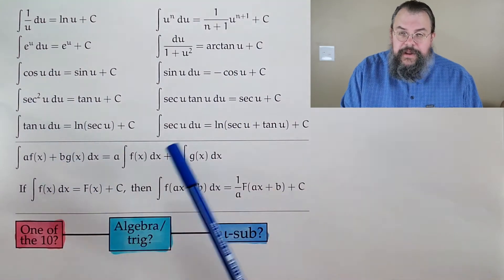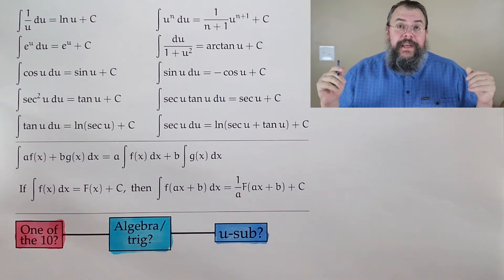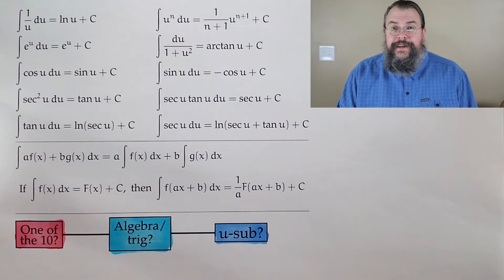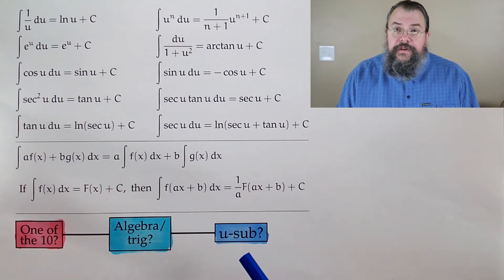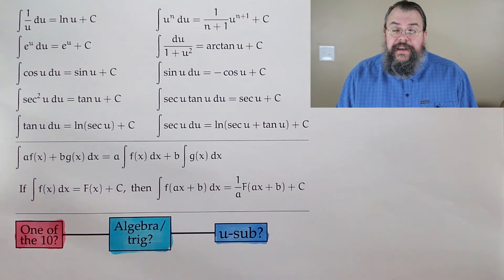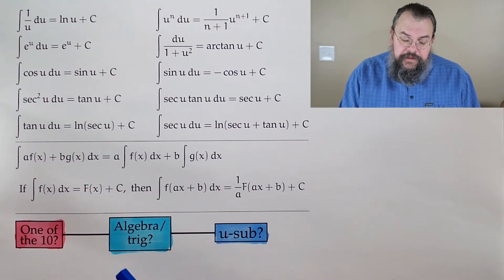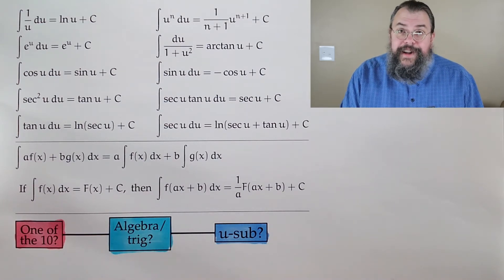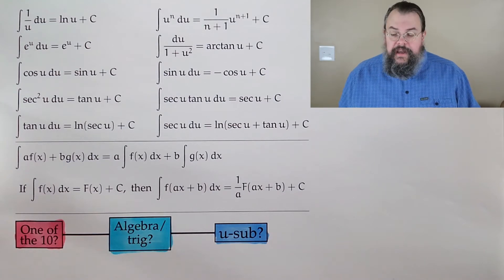Does it look like one of these? If it does, we're good, life is great. If not, is there some algebra or trig we can do — in other words, can we simplify? How about, is there a u-sub? If there is, do it. And then, after you do algebra, trig, or a u-substitution, you start again: is it one of my 10? Keep going. Sometimes it takes several rounds to actually make progress.